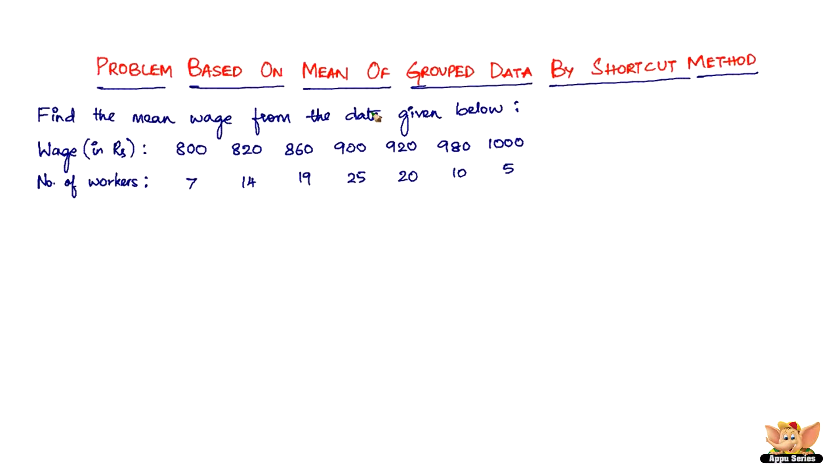So what we have to do first is get back to the formula which says mean x̄ equals A plus 1 by n times summation of fidi. So we need the assumed mean. Let the assumed mean be equal to 900.